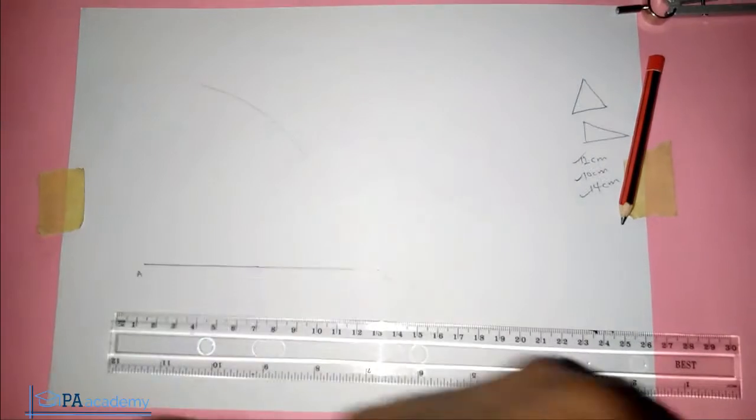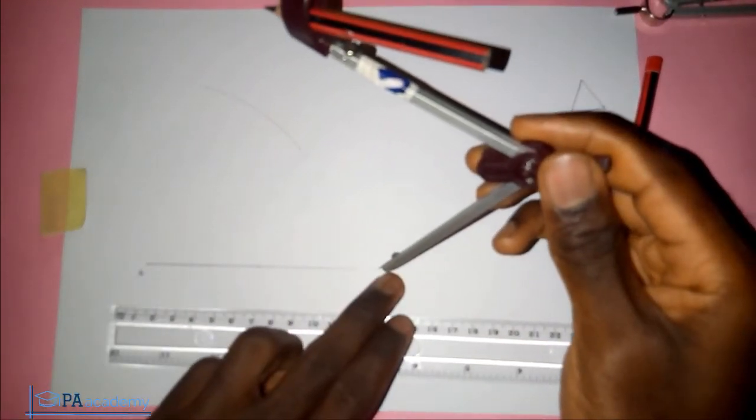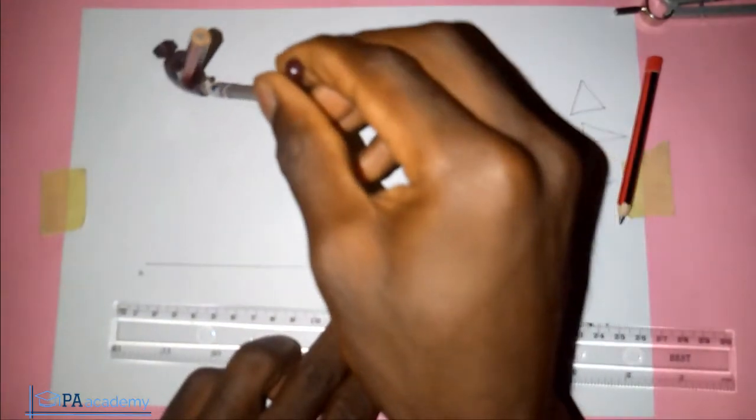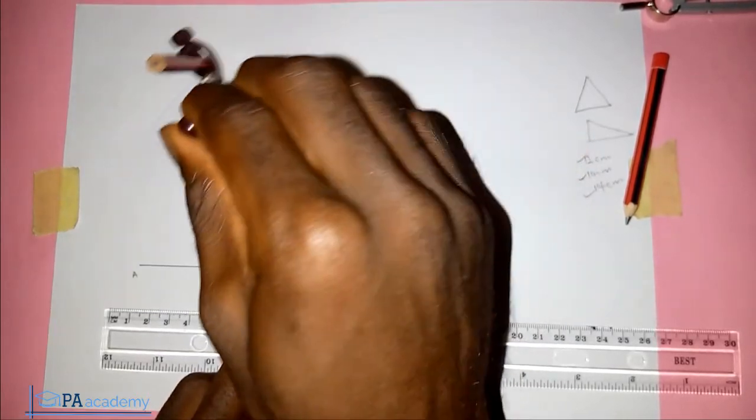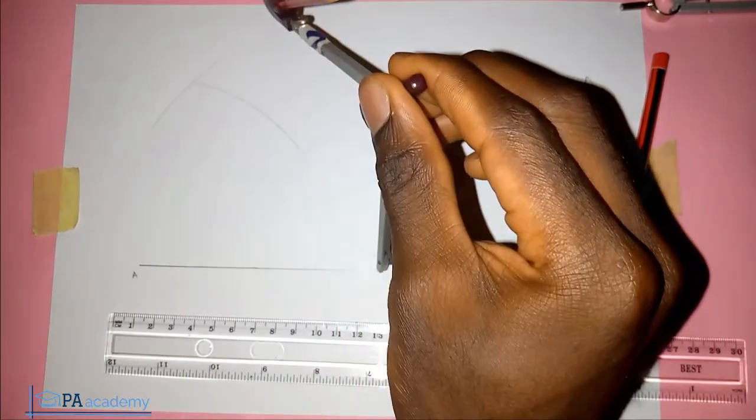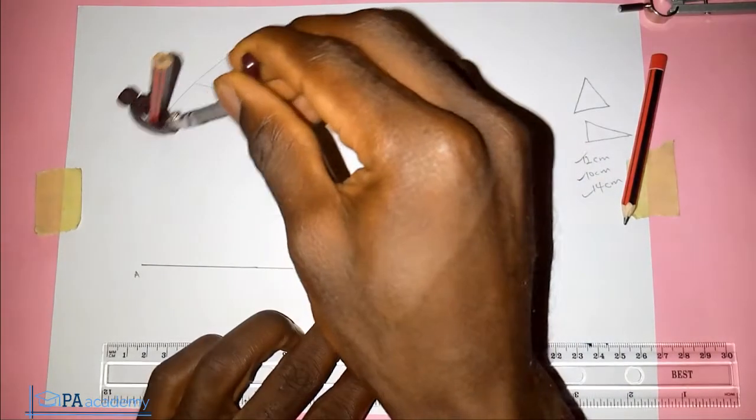So this is 14. Now we'll come to point B. We cannot do it from point A again. So from point B, at the length of 14 cm, we draw an arc. So this is the arc from point B, measuring 14 cm.